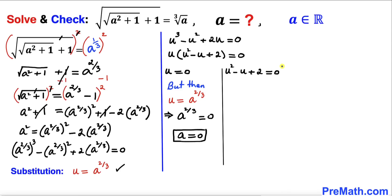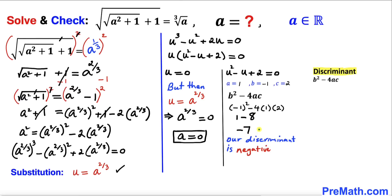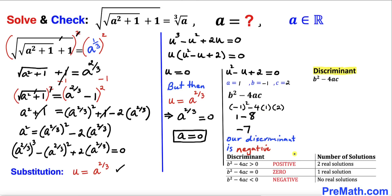Now let's focus on u squared minus u plus two equals zero. Recalling the discriminant formula b squared minus 4ac, where a is 1, b is negative 1, and c is positive 2: the discriminant is negative 1 squared minus 4 times 1 times 2, which equals 1 minus 8, giving negative 7. Since the discriminant is negative, there are no real solutions from this factor.